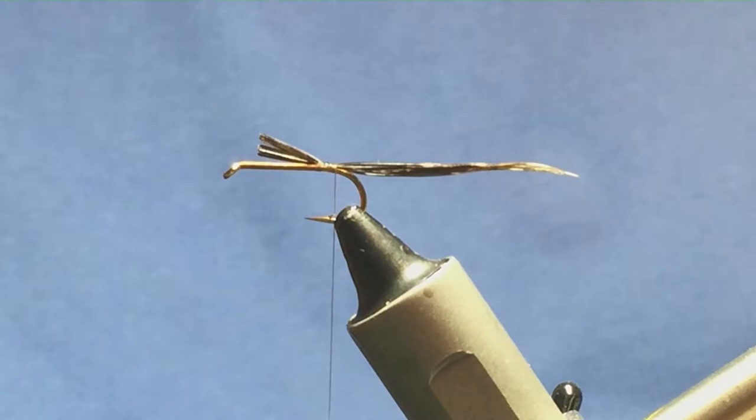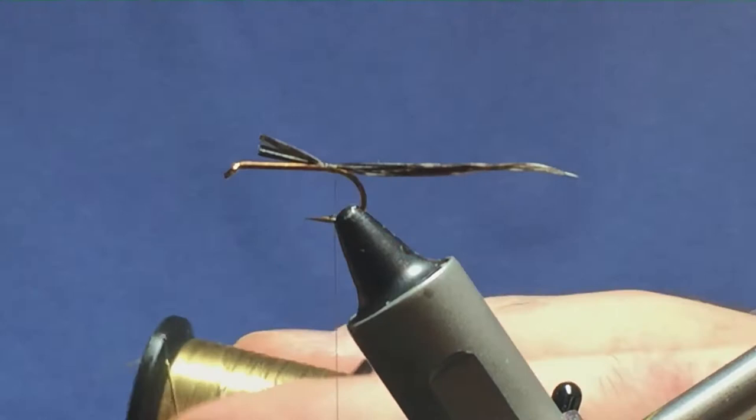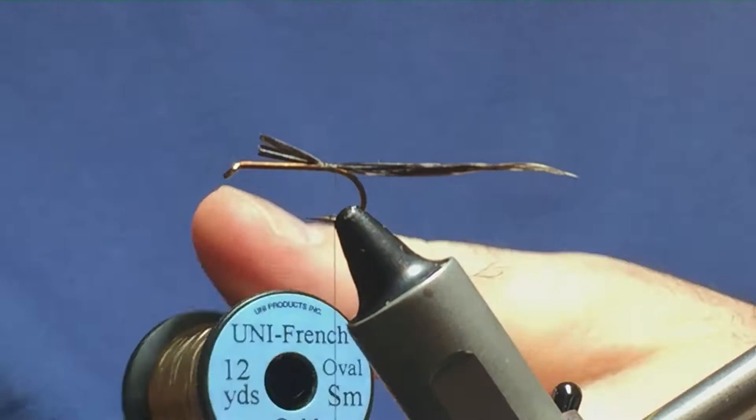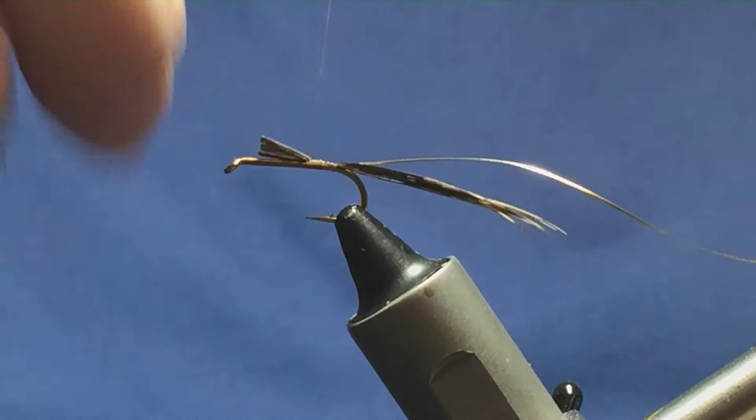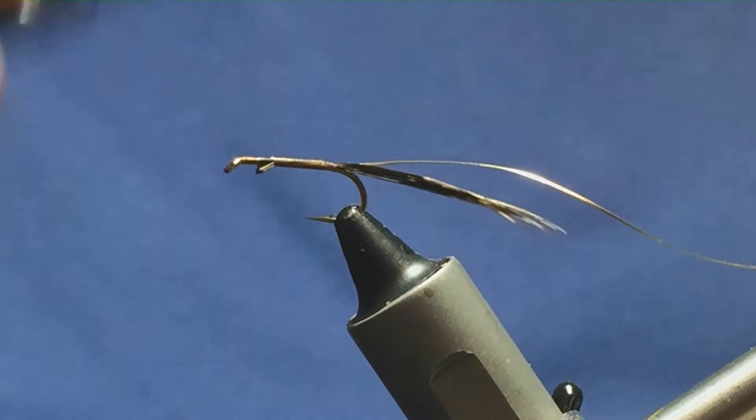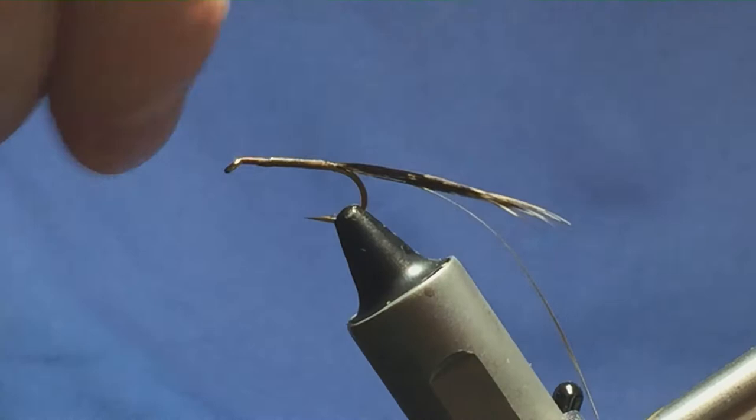Now the rib is an oval gold tinsel in small. So I'm just going to come in and take a length of this off the spool. Then I'm just going to offer this up much the same length as the cut end of the pheasant tail. Then I'm just going to run my thread up tying these in. So I'm just going to make sure you're securing everything in. Now we don't need to be too fussy with the body. Then I'm going to bring the thread back in open turns.